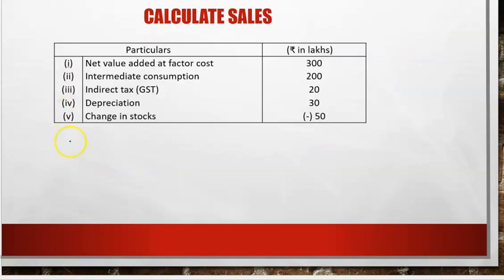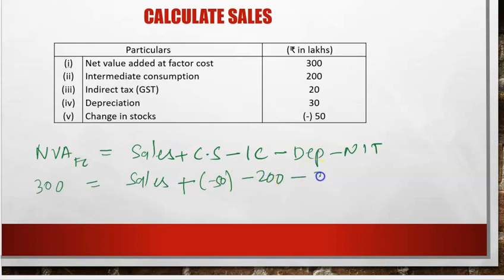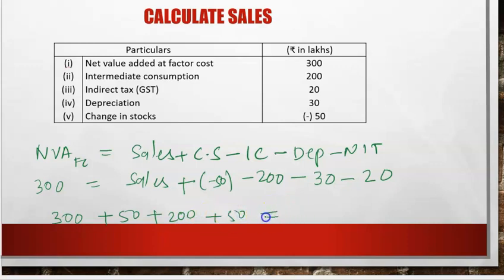Last, a very important reverse question: NVAFC is given and we need to find Sales. Write the formula: NVAFC = Sales + Change in Stock − IC − Depreciation − NIT. Put values: 300 = Sales + (−50) − 200 − 30 − 20. Rearranging, Sales = 300 + 50 + 200 + 30 + 20 = 600. So Sales = 600.